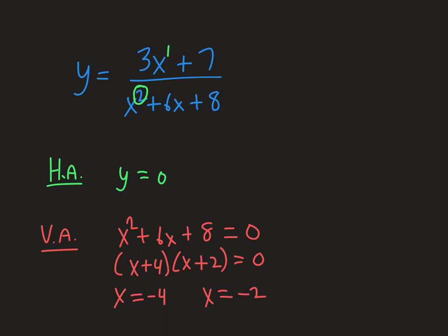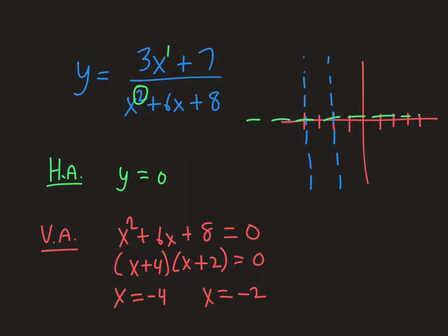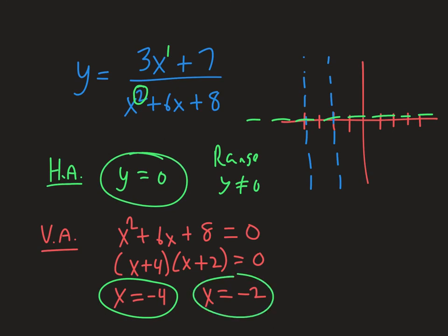With the asymptotes identified — vertical lines at x equals negative 4 and x equals negative 2, and a horizontal asymptote at y equals zero — you could use a graphing utility to fill in the actual graph. The range means y cannot equal zero, and the domain excludes x equals negative 4 and x equals negative 2, though graphing may slightly adjust domain and range in some cases.